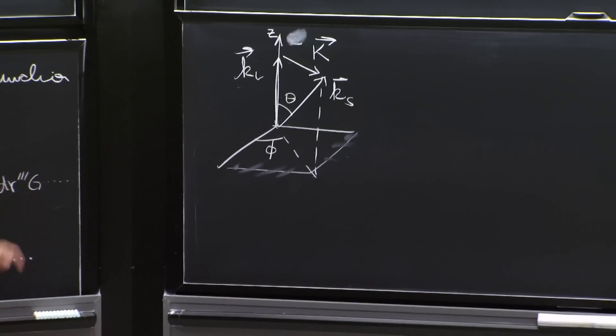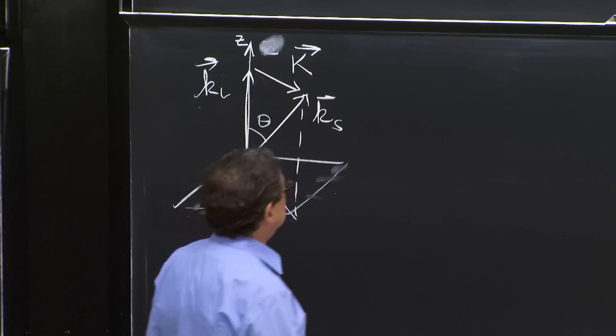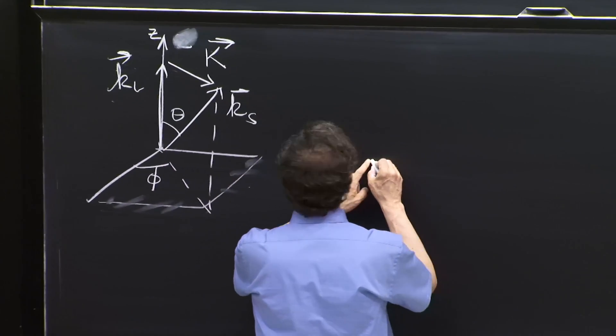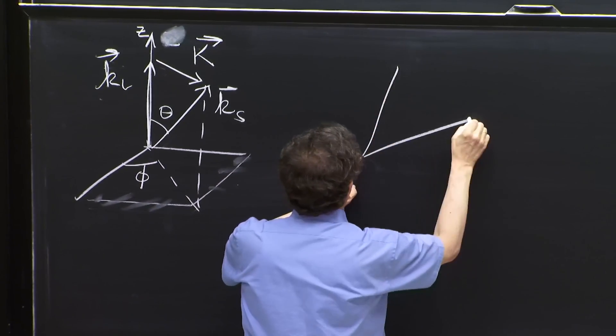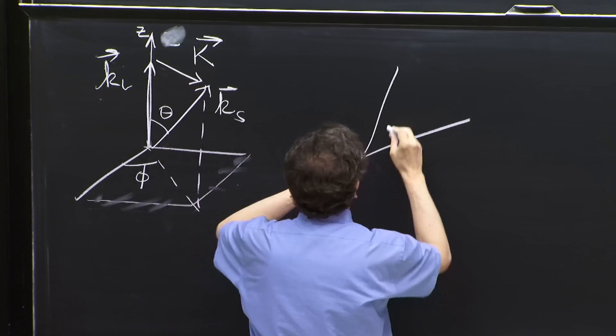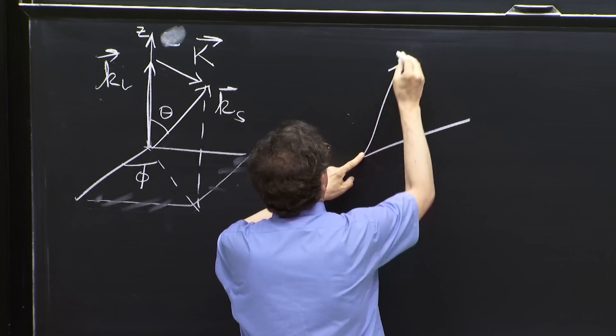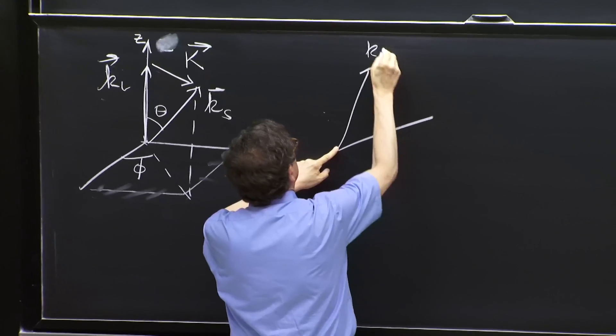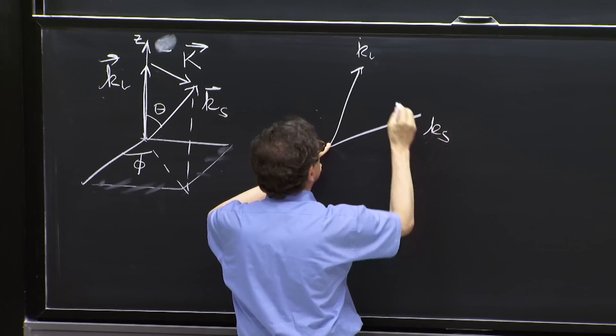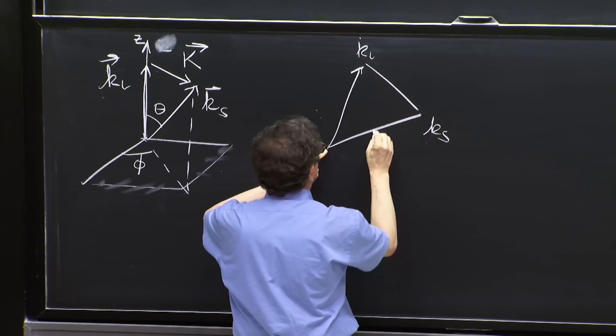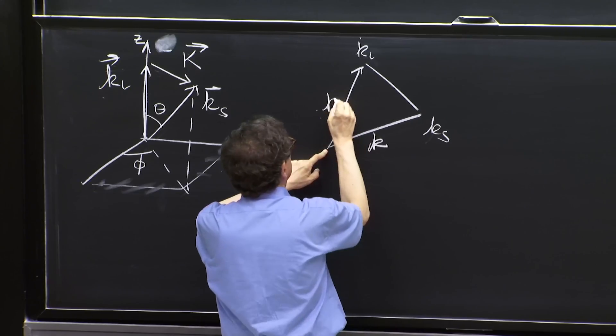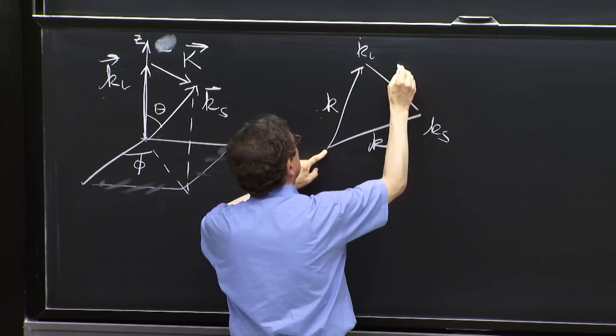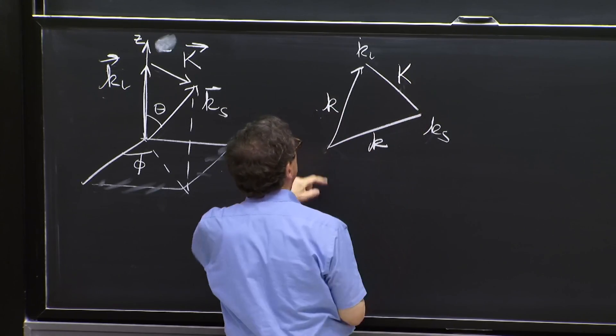But one thing you can say about this vector is its magnitude is easily calculable, because there is a triangle here that we drew that has k incident and ks. And here is k. So this has length k, this has length k, and this has length capital K, the triangle with angle theta.